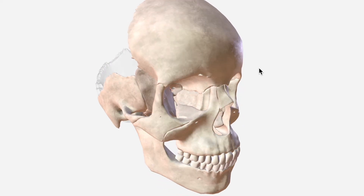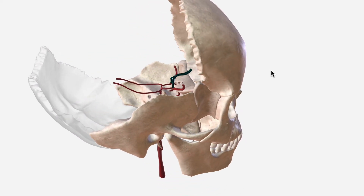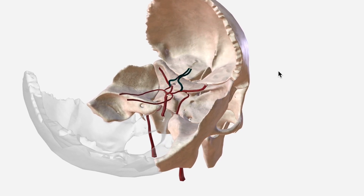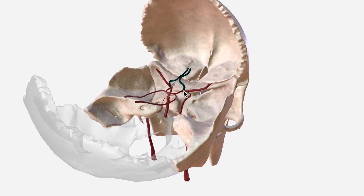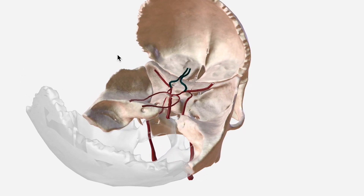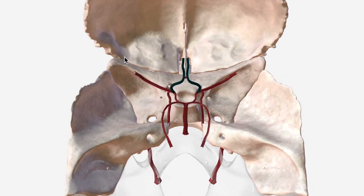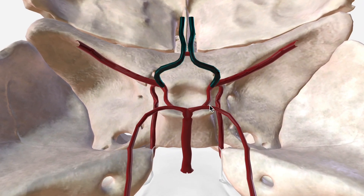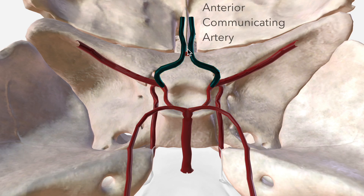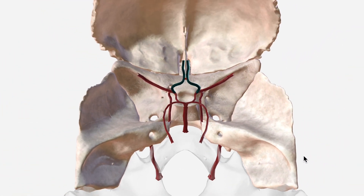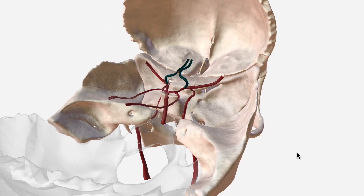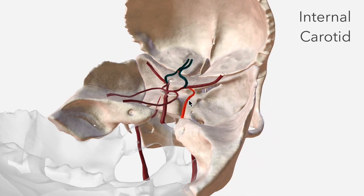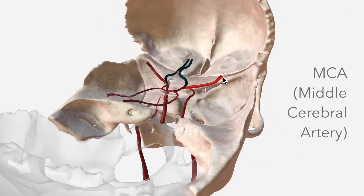In this video we're going to talk about the anterior cerebral artery, which we have highlighted here in dark blue. As you can see, it makes up the majority of the anterior portion of the circle of Willis, which is completed by the anterior communicating artery just here. The anterior cerebral artery, or ACA, is one of the terminal branches of the internal carotid artery, the other being the MCA.